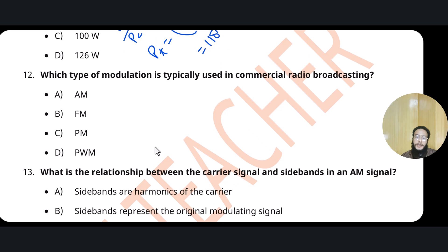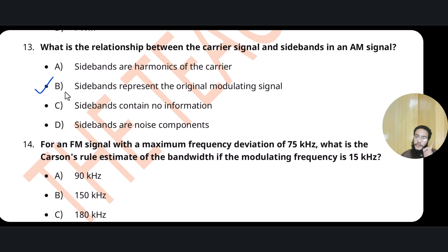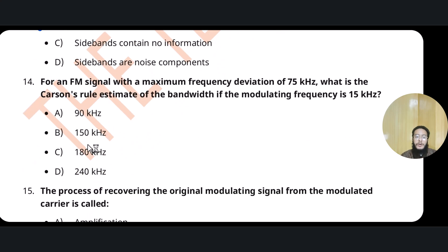Question 12: Which type of modulation is typically used in commercial radio broadcasting? AM is used in radio broadcasting — it has medium wave and short wave bands (MWSW). Question 13: Regarding the relationship between carrier signal and sidebands — when sidebands are created, the actual original information is stored in the sidebands. The sidebands represent the original modulating signal.